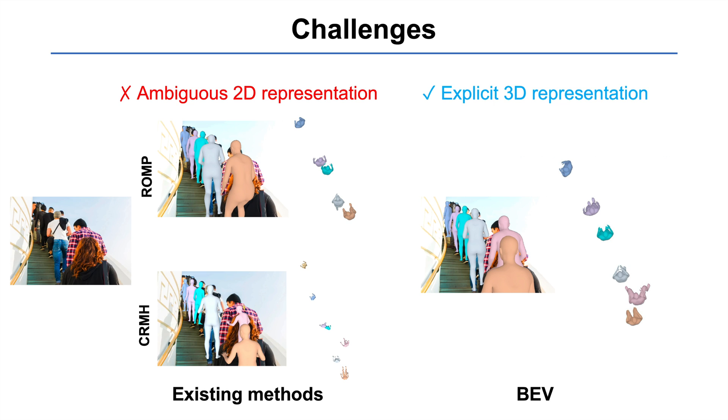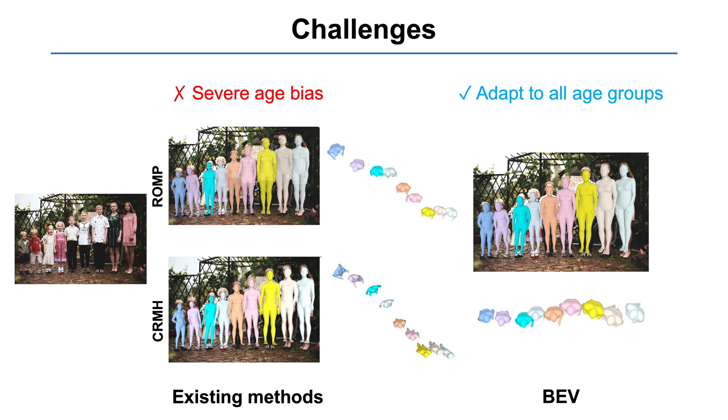We observe two key challenges in this task. First, the 2D representations employed by most existing methods do not explicitly model depth. Second, existing methods only model adults and assume everyone is of adult height. This induces a depth bias for children and infants.